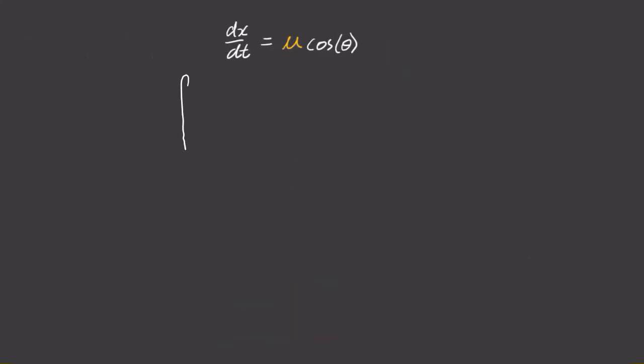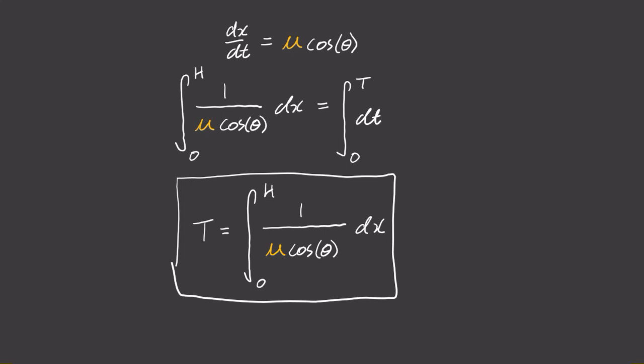From the first equation, we can rearrange and integrate to solve for the total time taken along your path. We'll integrate from the start, x equals 0, to the end, x equals h. This means the total time T is given by the following integral. And our job now is to minimize this value by solving for the best function theta that defines our path.